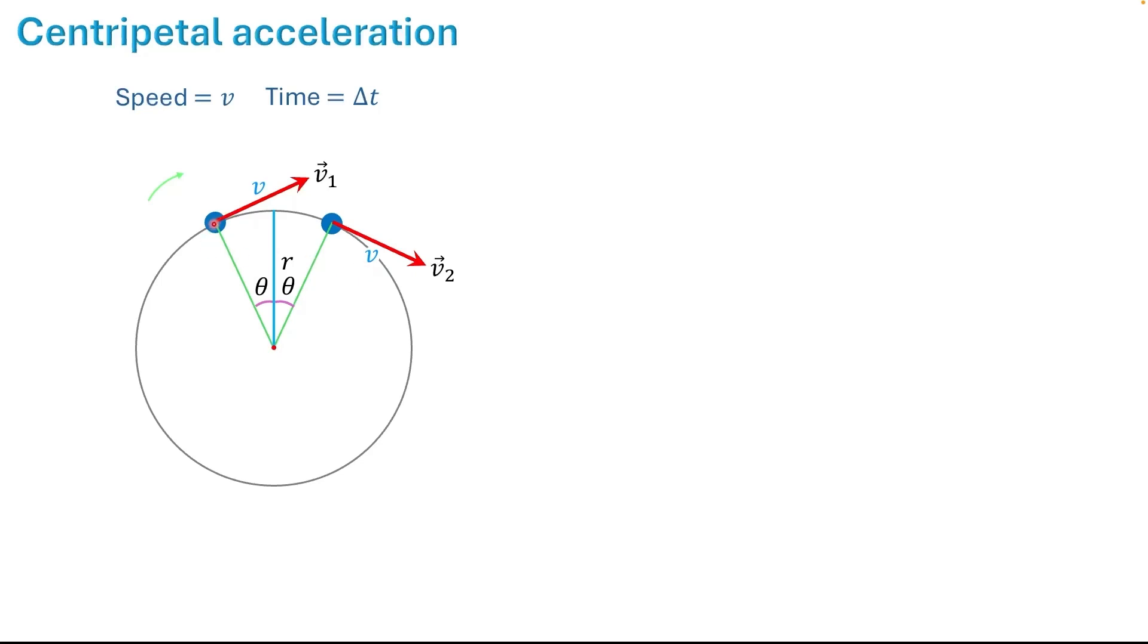The object is displaced from here to here. I take the displacement as d. Dividing the displacement by the time interval, we get the average velocity of the object. First, what we are going to do is find the average acceleration of the object over this time interval. From that we will find the instantaneous acceleration, which is the centripetal acceleration.